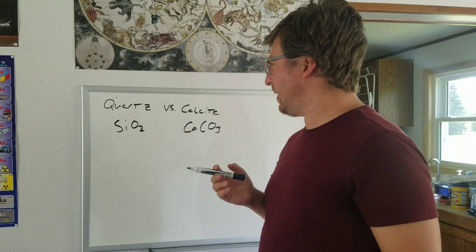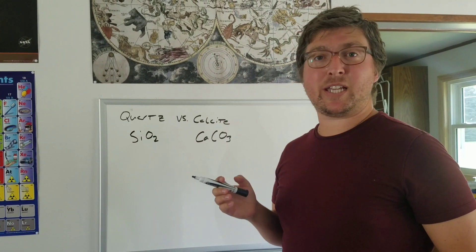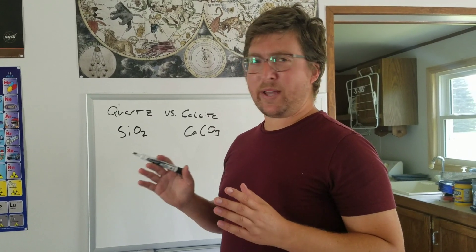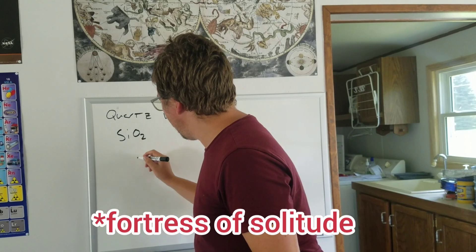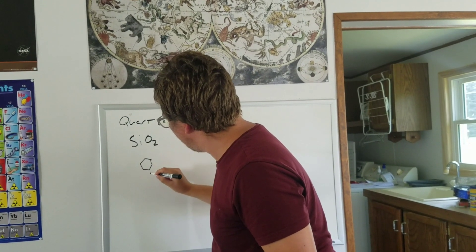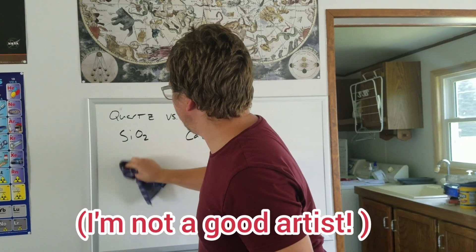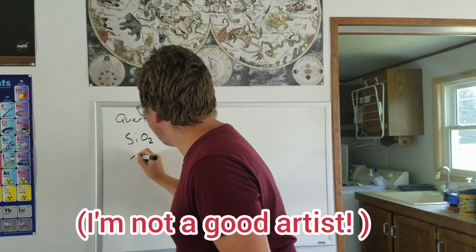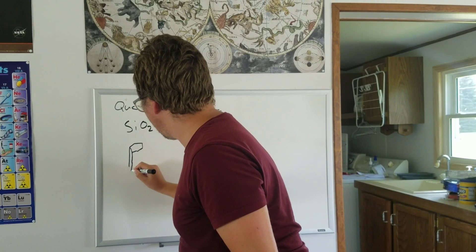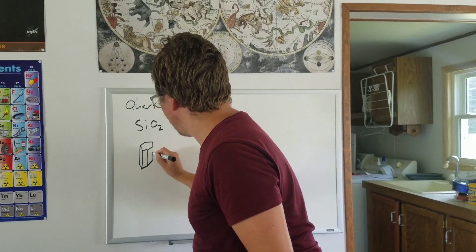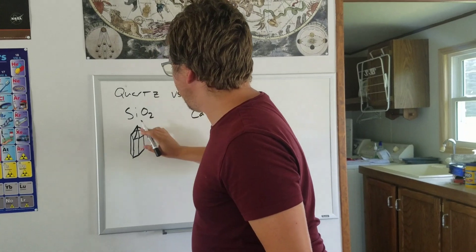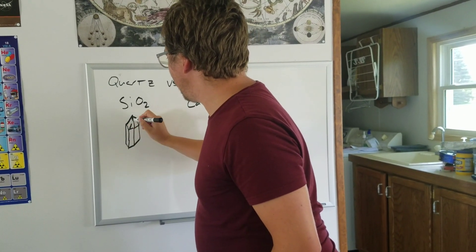Another way to tell the difference besides the hardness is the crystal habit — that's the shape of the crystals. Quartz is famous for forming what I call the Superman's hideaway type crystals. You get these beautiful hexagonal-shaped crystals that come up to a point like so.